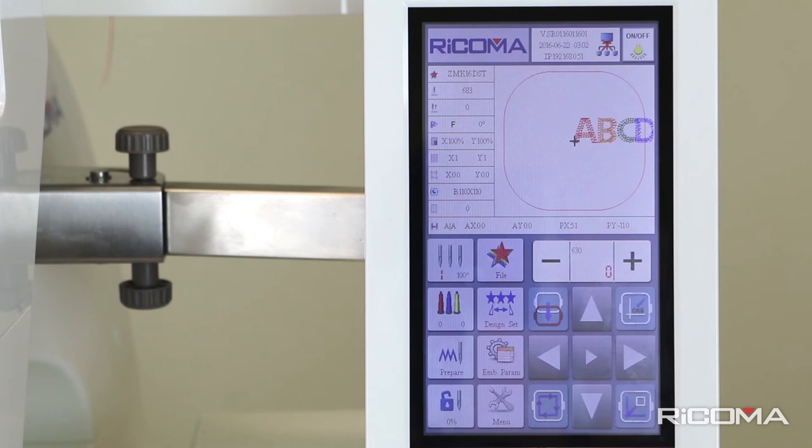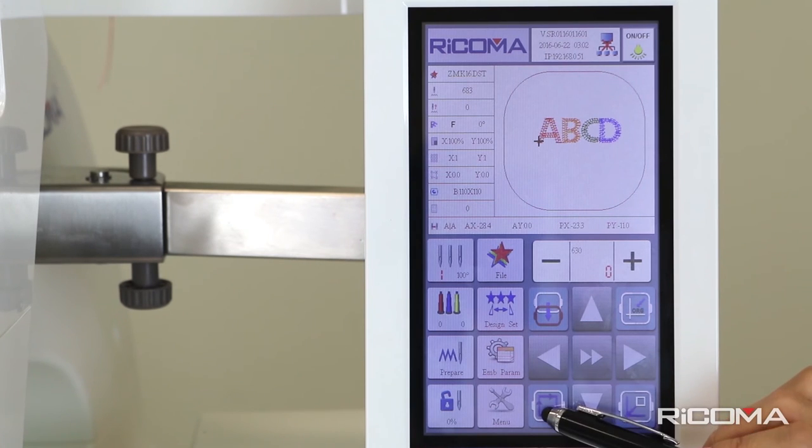You can play with the positioning of your design. Finally, press the trace design icon located in row 4, column 3, represented by a frame within a frame.